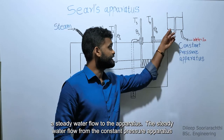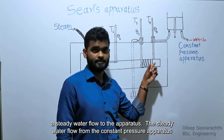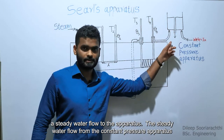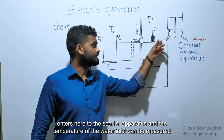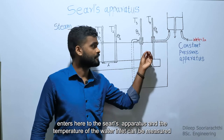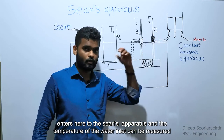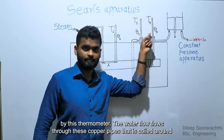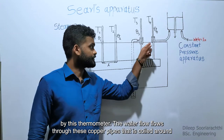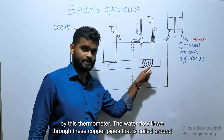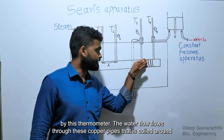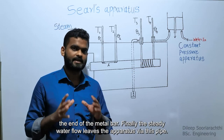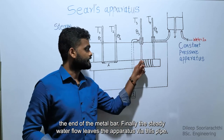The constant pressure apparatus provides a steady water flow to the apparatus. The steady water flow enters the apparatus here, and the temperature of the water inlet can be measured by this thermometer. The water flow travels through copper pipes that are coiled around the end of the metal bar, and finally the steady water flow leaves the apparatus.